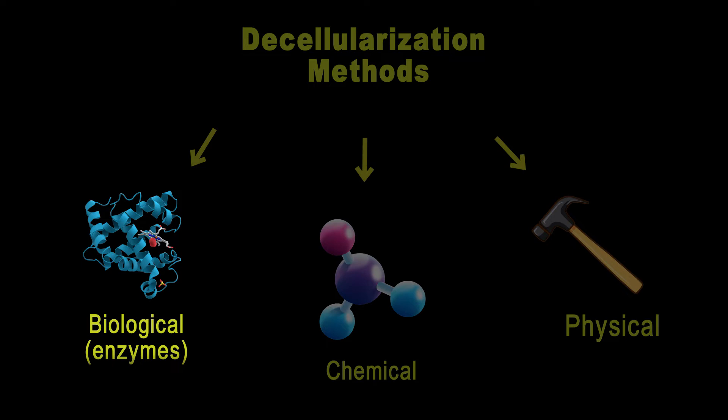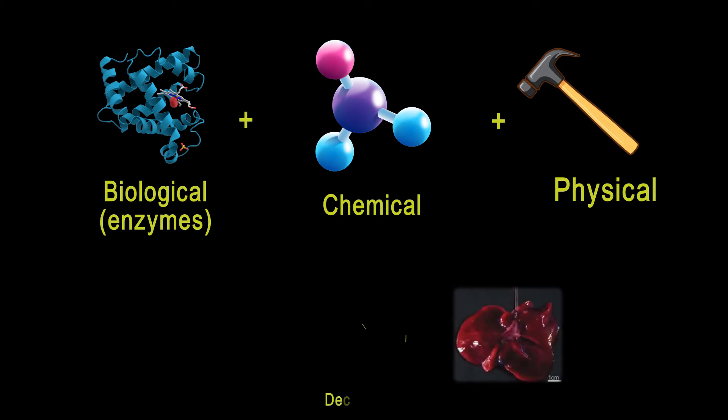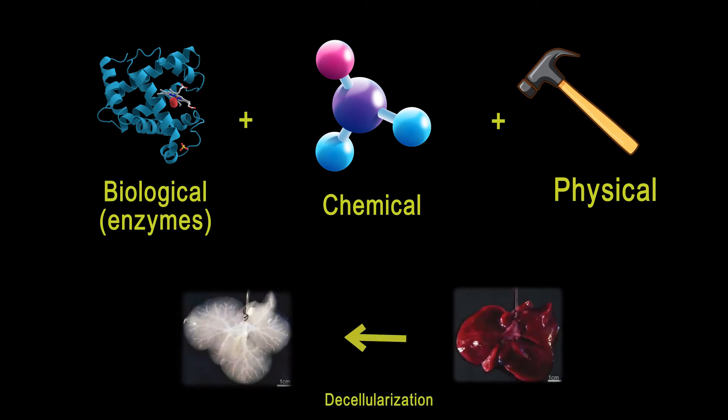So, what do scientists do? Well, they often use a combination of these methods to get the best of both worlds. They would use a bit of mechanical forces to break apart the tissue, followed by a chemical treatment to dissolve the cells and leave behind the ECM, and then finishing up with some enzyme to clean up the ECM and remove any leftover contaminants.